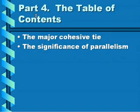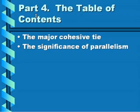The table of contents is really the major cohesive tie in the piece. The significance here is cohesion through parallelism — whatever you're terming the major and minor sections, whether you're using parallel phrases or a numbering system, these have to be clear. Some proposals run hundreds of pages, and very often the single thing that ties it all together is the table of contents. Take care to achieve cohesion through parallelism here.